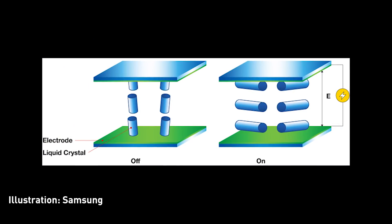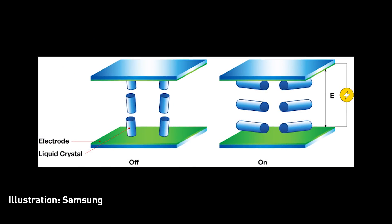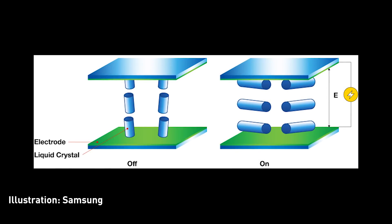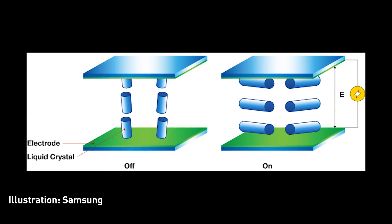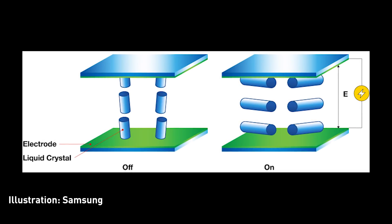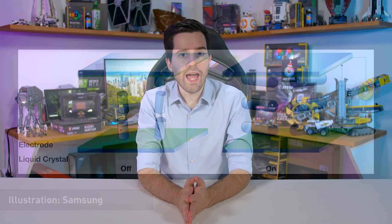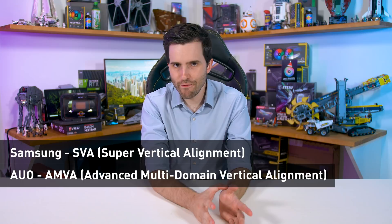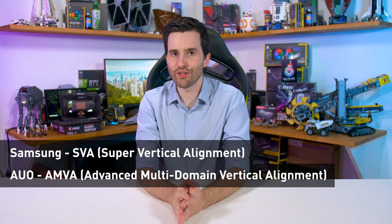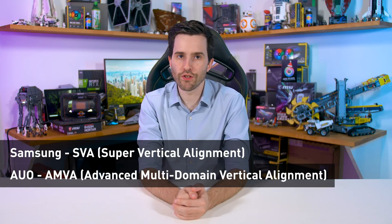VA stands for vertical alignment. As the name suggests, this technology uses vertically aligned liquid crystals which tilt when a voltage is applied to let light pass through. This is the key difference between IPS and VA — with VA the crystals are perpendicular to the substrates, while with IPS they are parallel. There are several VA variants, including Samsung's SVA and AU Optronics' AMVA — don't confuse AMVA with AHVA, they are very different despite only a single-letter name difference. In summary: TN panels twist, IPS panels use a parallel alignment and rotate, while VA panels use a vertical alignment and tilt.